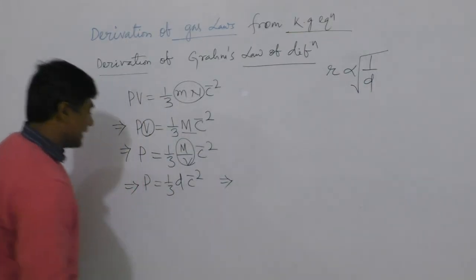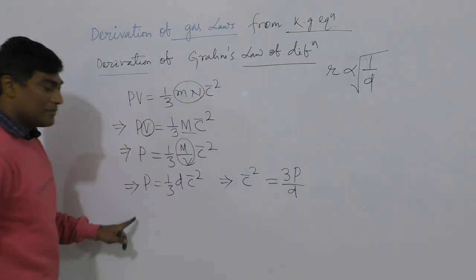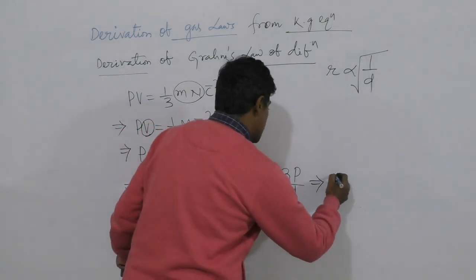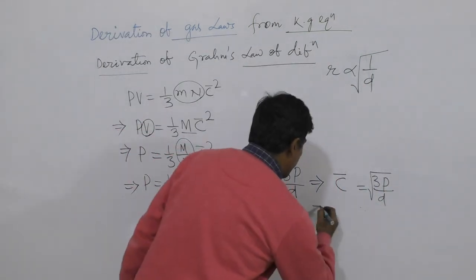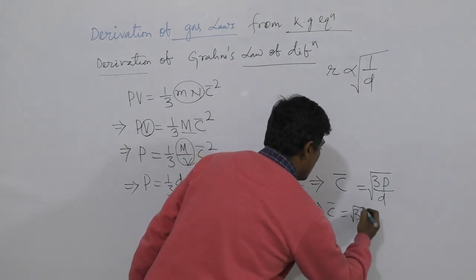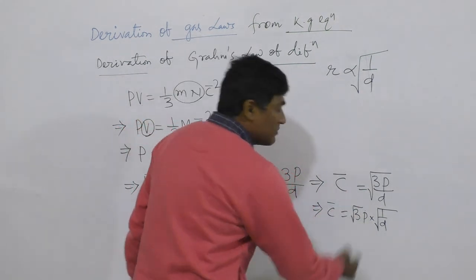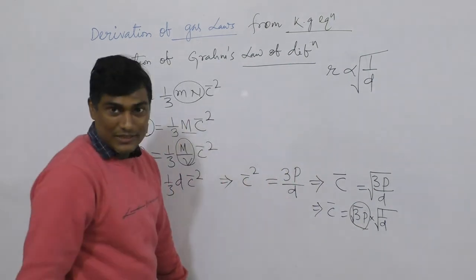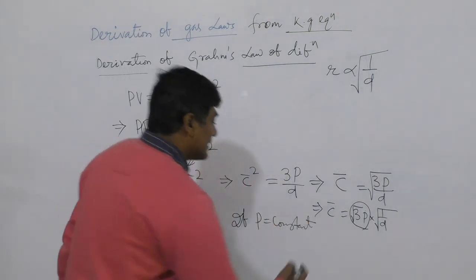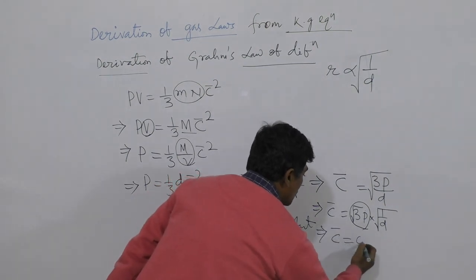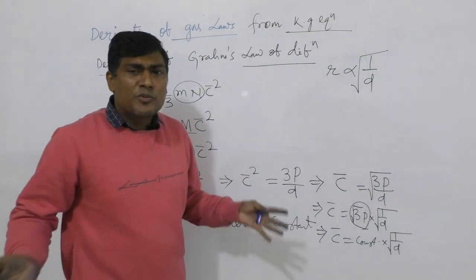This implies c̄² equals 3P by D, and therefore c̄ equals the square root of 3P by D, which can be written as the square root of 3P multiplied by 1 over the square root of D. Since pressure is constant, the square root of 3P is a constant, so c̄ equals constant times 1 over root D.